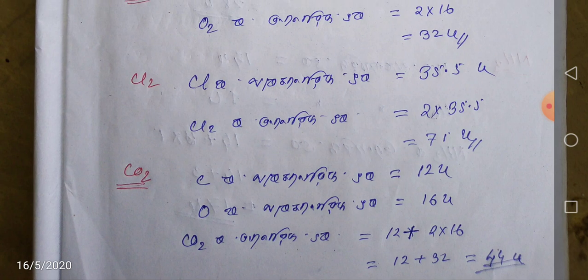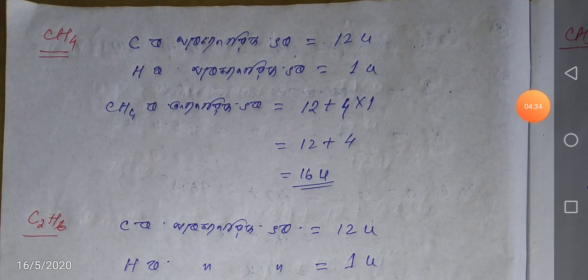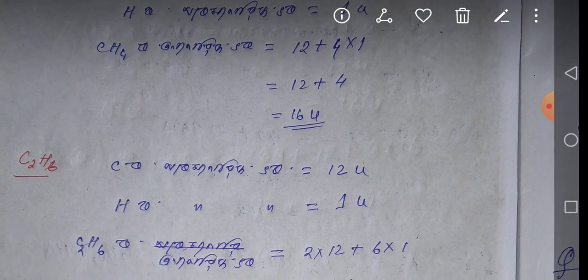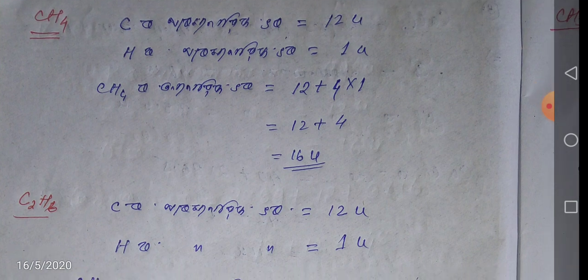Carbon dioxide: carbon dioxide comes from oxygen. Carbon dioxide is 12 plus 2 into 16. CH4 is hydrogen — carbon is 12, so hydrogen is 1. CH4 is 12 plus 4 into 1.